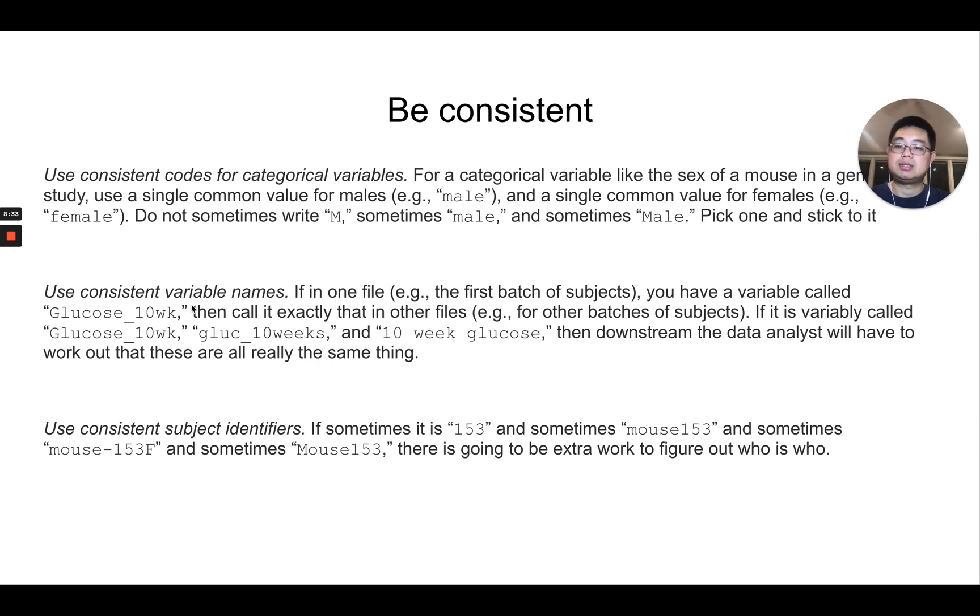Use consistent variable names. So in this example, you may have this glucose_10wk as one column name, but in a different file, maybe you have a different name meaning the same thing. For example, here you now spell ten weeks spelled out instead of 10 WK here.